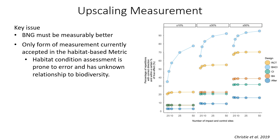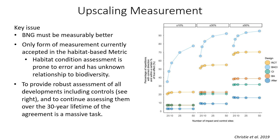Habitat condition assessment is also problematic: lots of surveyors disagree, and it's quite a subjective and inconsistent way of assessing habitats with a lot of variation between individuals. It's not very quantitative, and it's quite difficult to expand because you have to visit the site in person at a particular time of year to observe the plant species that characterise those habitats. This is going to be an enormous task, and so there's a lot of appetite for considering what technologies might help automate some of this assessment workload.